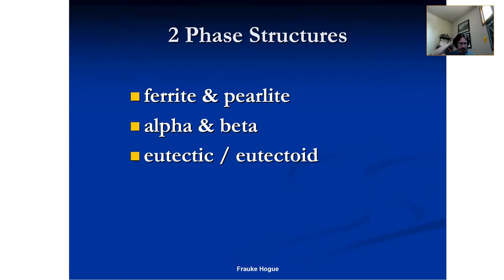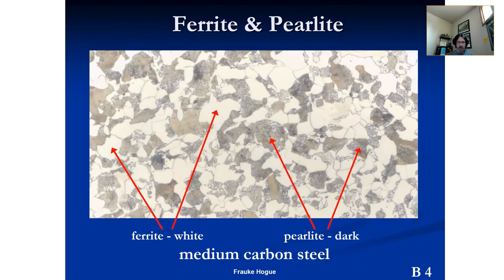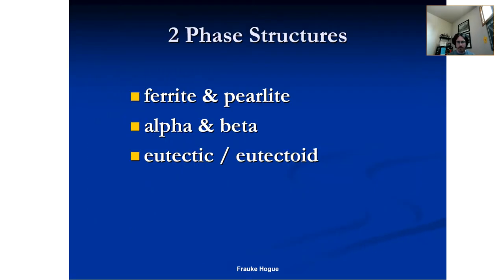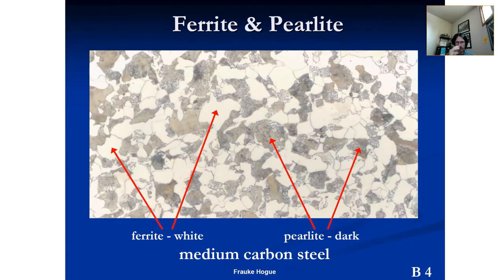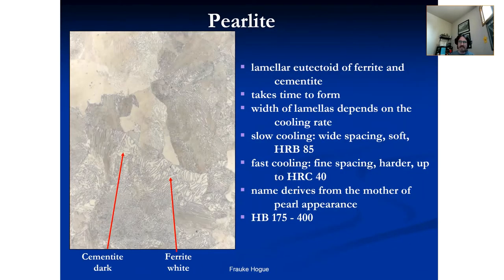Two-phase structures — we're focusing a bit on iron-carbon phase diagram generated materials today. Ferrite and pearlite, alpha and beta, and eutectic/eutectoid. If you remember the difference: eutectoid is when it's solid, meaning what was liquid at the eutectic point has cooled to a solid at room temperature. In a ferrite and pearlite microstructure: ferrite is white, pearlite is the darker phase. We see this in a medium carbon steel. Pearlite is a lamellar microstructure composed of ferrite and cementite.